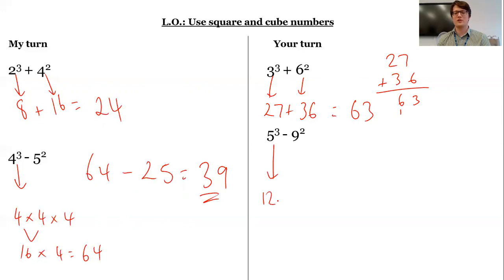Five cubed, 125. Minus nine squared, nine times nine, which is 81. So I'm going to, again, do a written method. Could do it mentally. Lots of different ways I could do it. What am I doing? 44, sorry. So I get 44. 12 subtract eight is four. So five cubed, subtract nine squared, is 44.